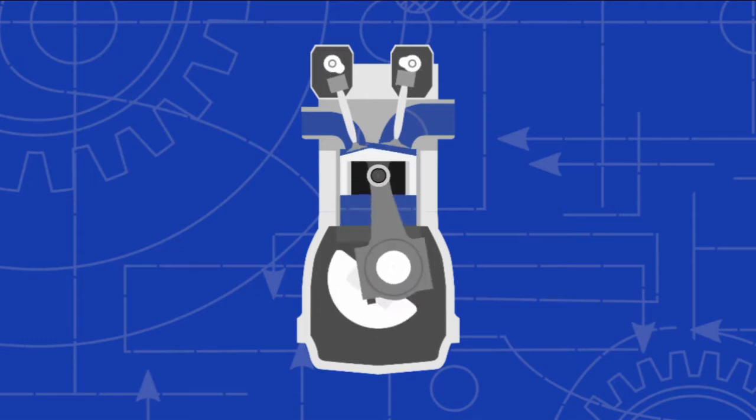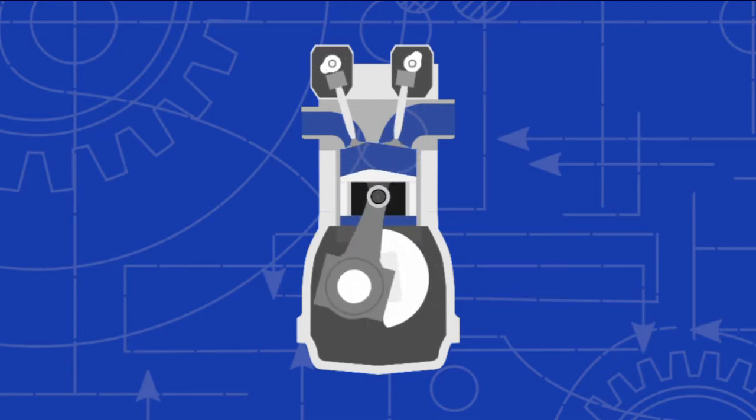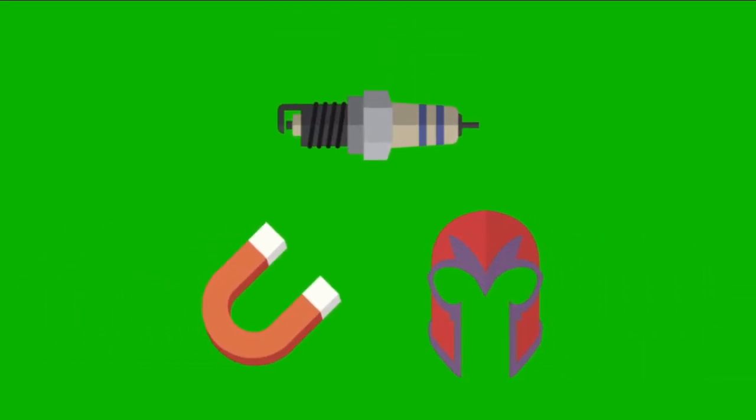Pistons execute their four strokes at different periods to make sure there is always a force rotating the propeller. The fuel in the cylinder heads are ignited by a system of spark plugs and magnetos.